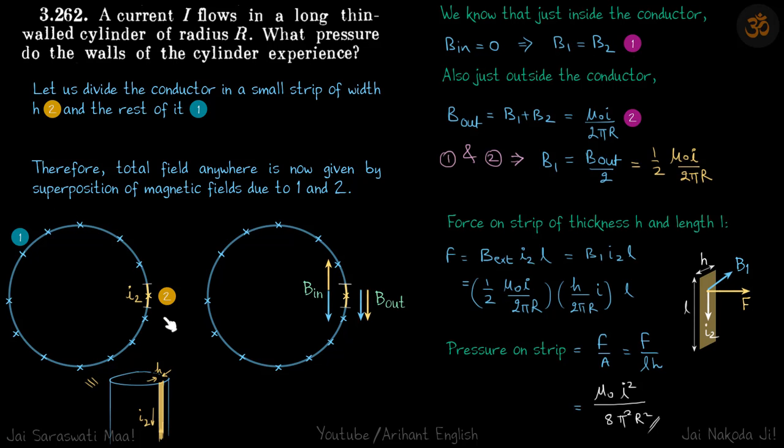B due to 1 plus B due to 2 equals 0. Net field is 0, which means B₁ equals B₂.